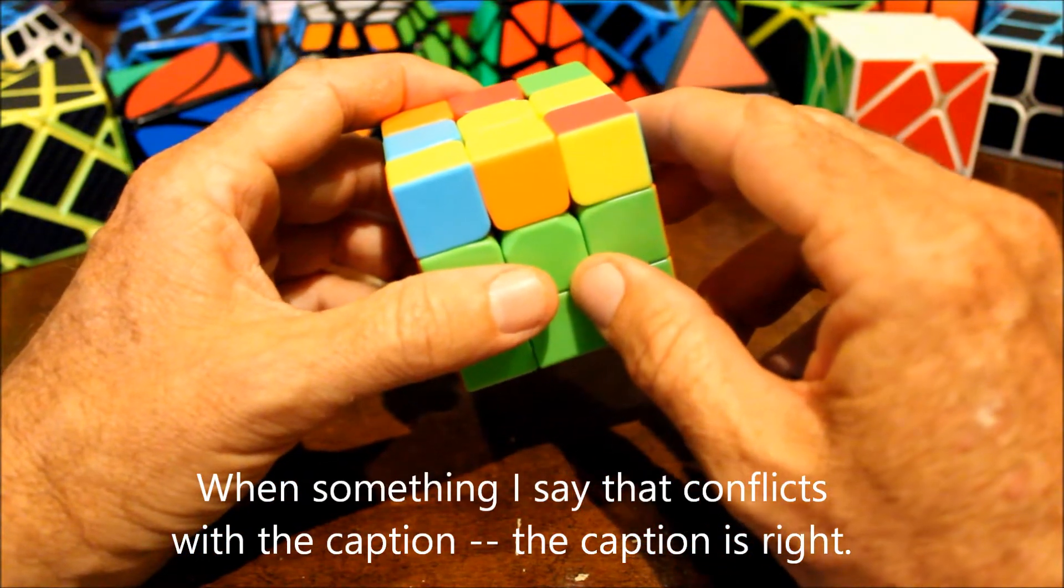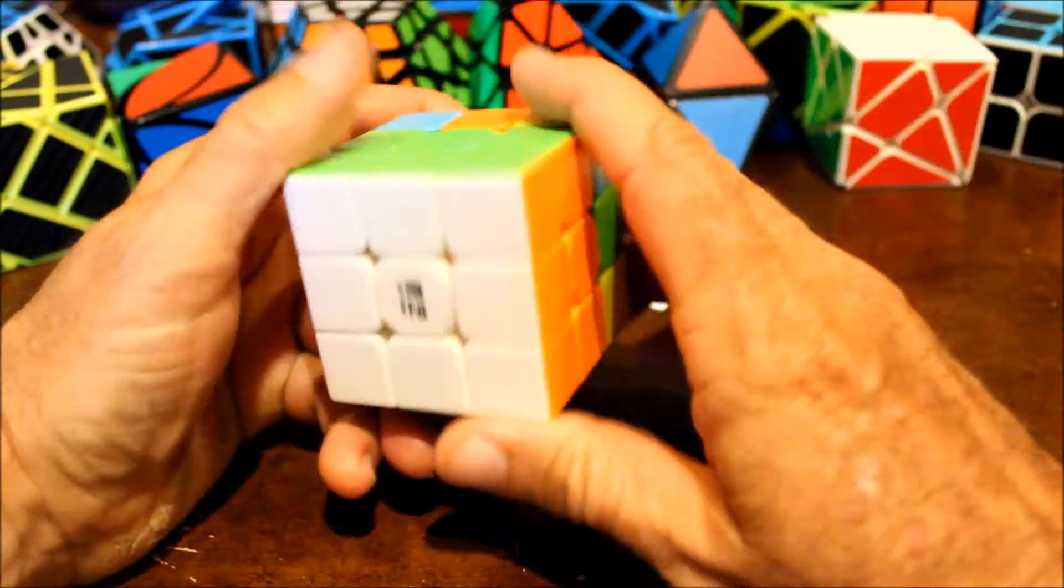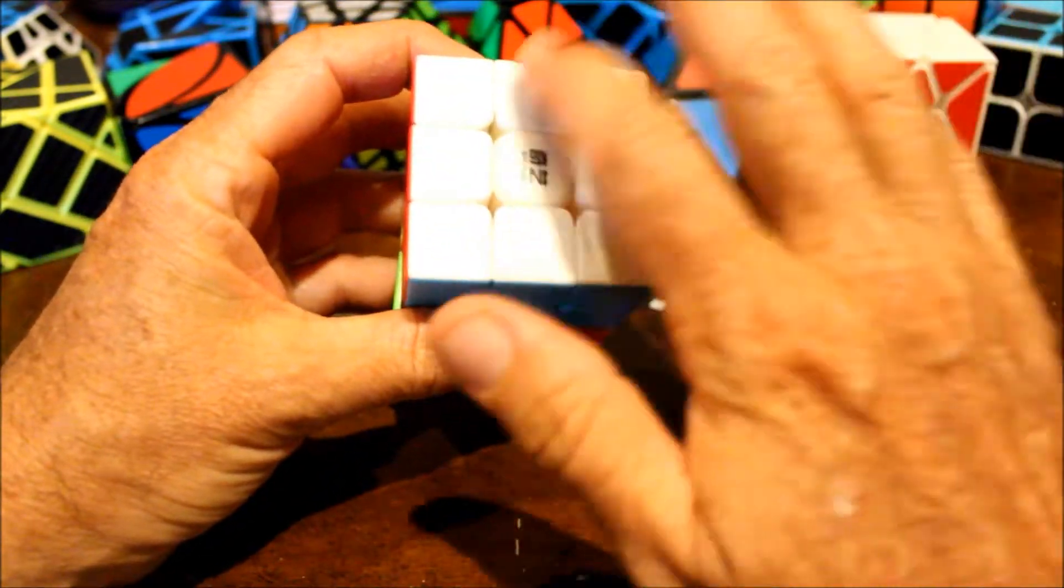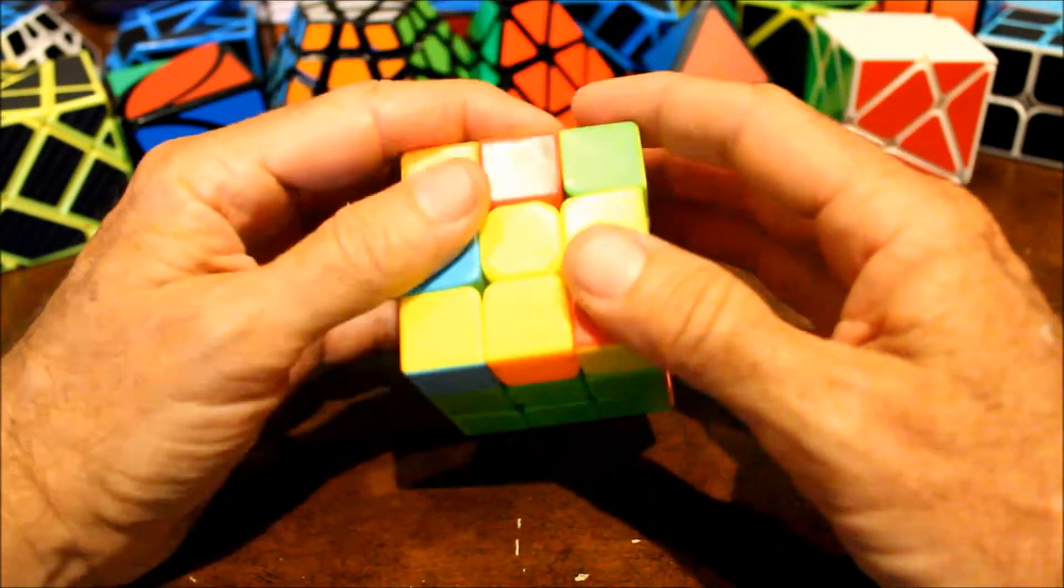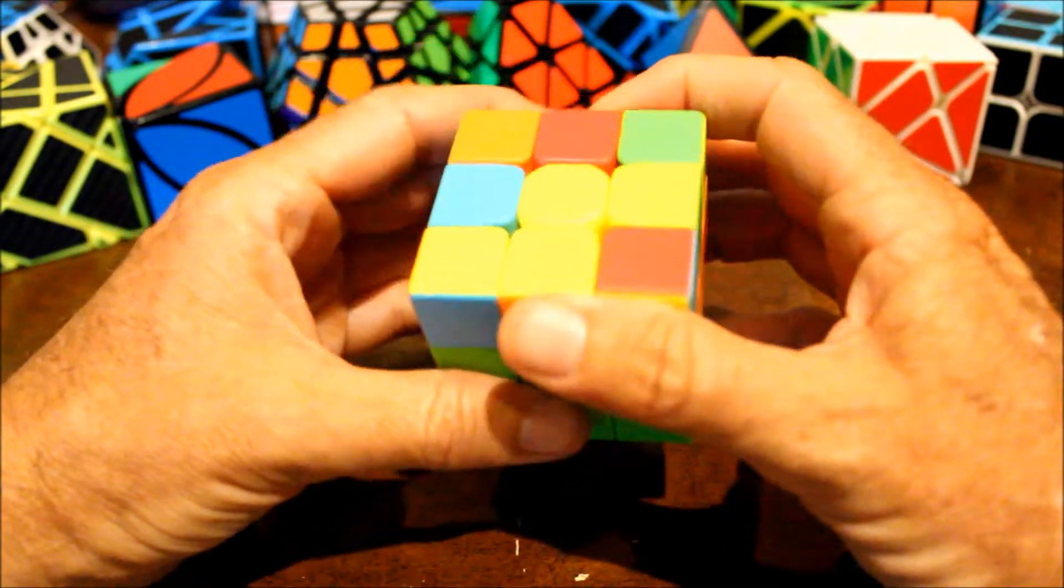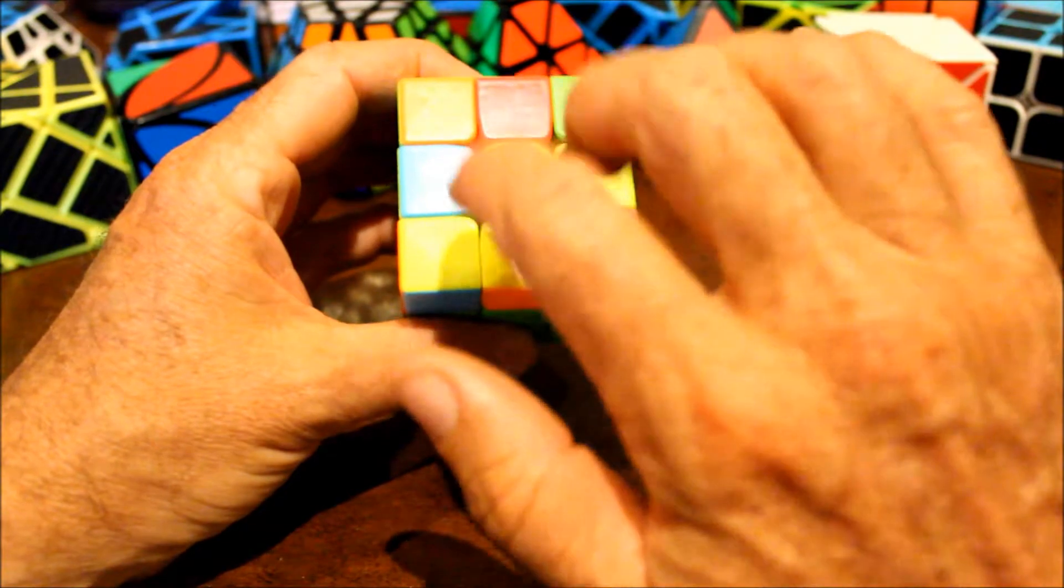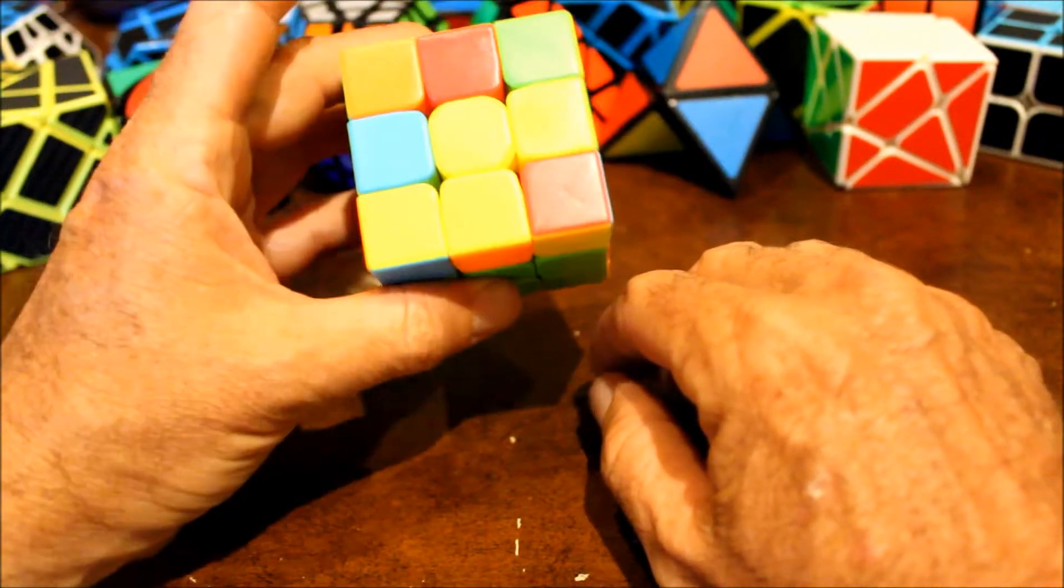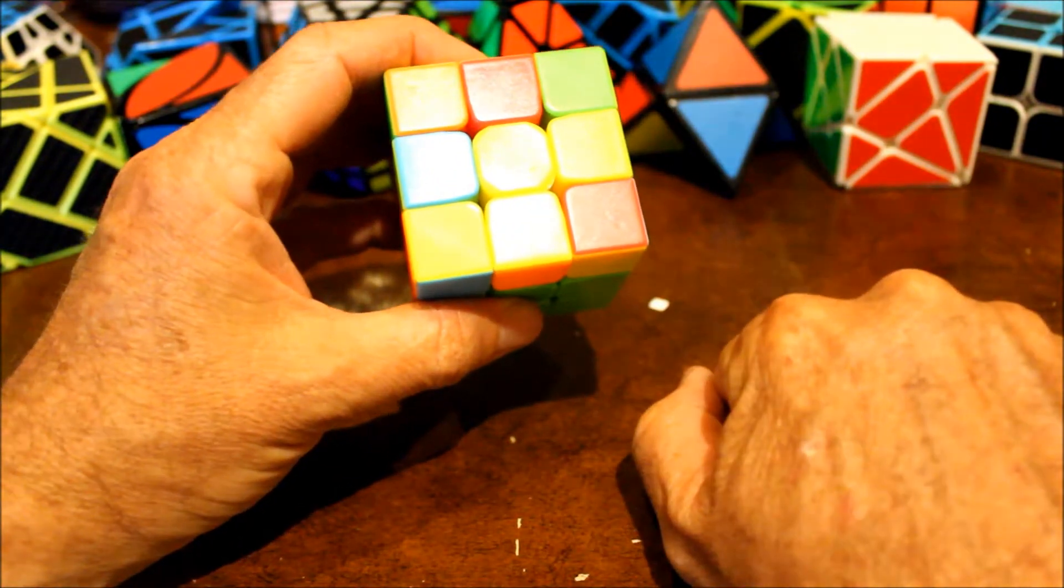The first part will be on achieving the yellow cross. You may recall that in part one we achieved the white cross. When you get to this point, you can either have zero, two, or four yellow pieces already on top. Most of the time it will be two, like in this situation. They could either be adjacent or across from each other.